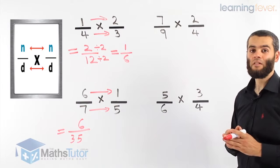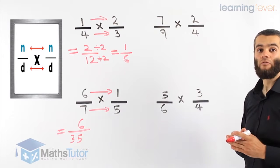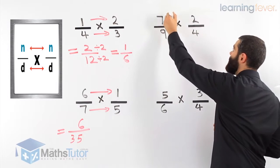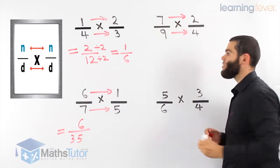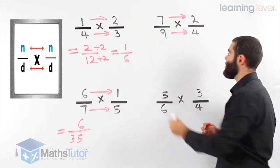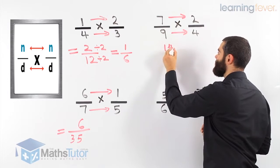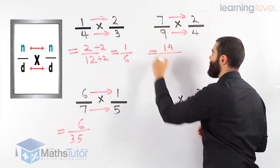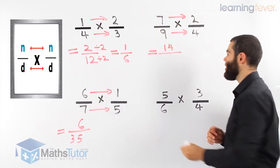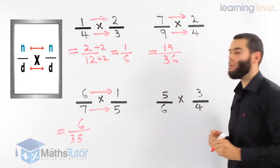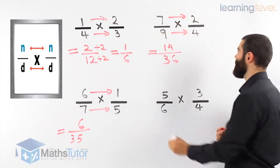Seven over nine times four. Seven times four is 36. Can we simplify? Of course we can.